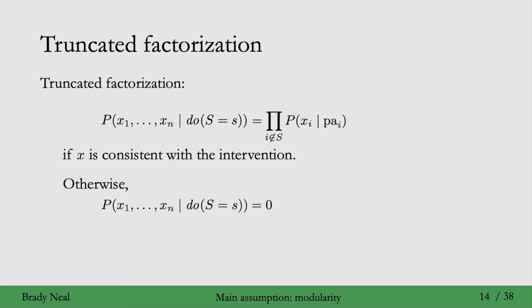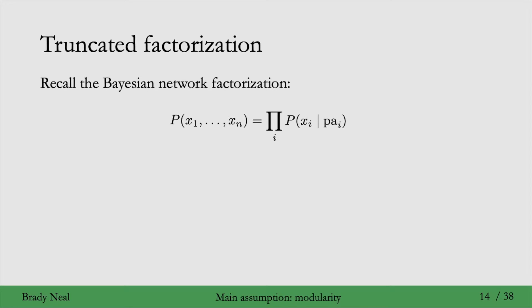To see why this is called the truncated factorization, let's go back a bit. So here was the Bayesian network factorization. And then to get to the truncated factorization, what we do is we truncate all the terms i in s. So all of the terms that correspond to variables that were intervened on, variables in s, they all get truncated from this factorization.